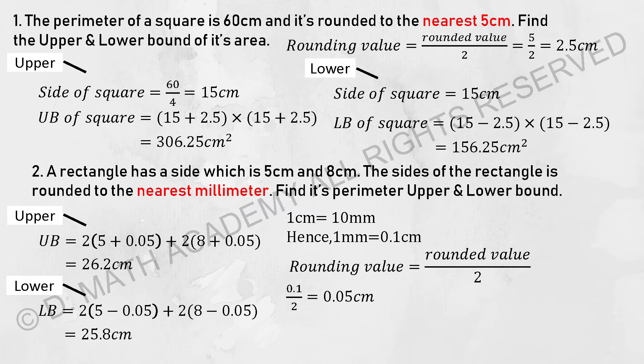For the next question, a rectangle has a side of 5 cm and 8 cm. The side of the rectangle is rounded to the nearest millimeter. Things to take note: 1 cm is 10 millimeters and 1 millimeter will actually be 0.1 cm. So for you to find the rounding value, simply take 0.1 divided by 2, you should get 0.05 cm.